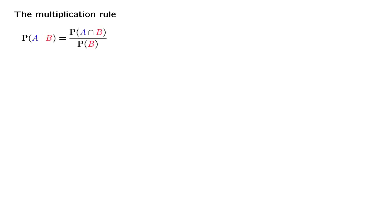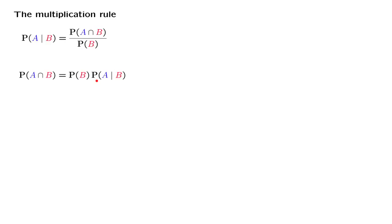Our starting point is the definition of conditional probabilities. The conditional probability of A given another event B is the probability that both events have occurred, divided by the probability of the conditioning event. We now take the denominator term and send it to the other side of this equality to obtain this relation, which we can interpret as follows: the probability that two events occur is equal to the probability that the first event occurs — event B in this case — times the conditional probability that the second event, event A, occurs, given that event B has occurred.